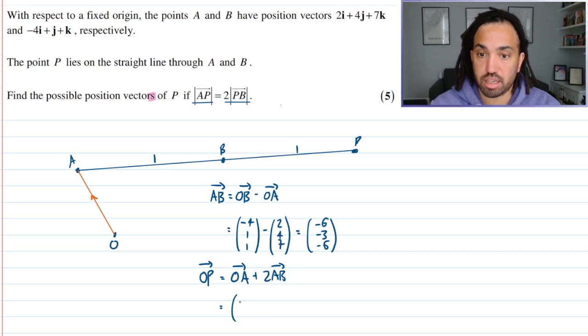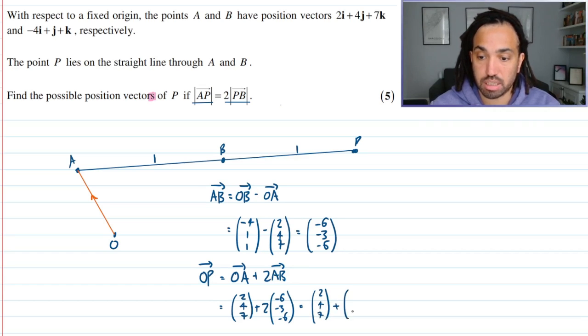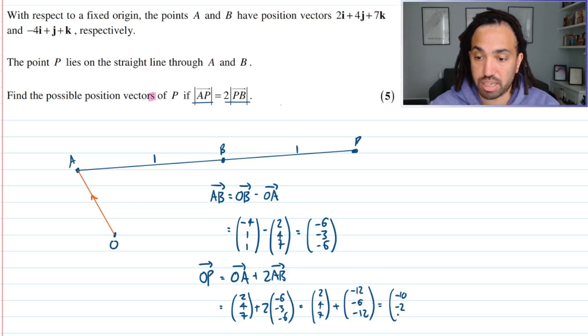So this will be 2, 4, 7 plus two lots of minus 6, minus 3, minus 6, which is 2, 4, 7 plus minus 12, minus 6, minus 12, which gives me minus 10, minus 2, and minus 5.